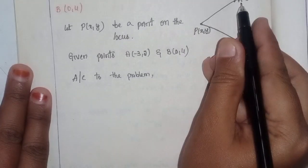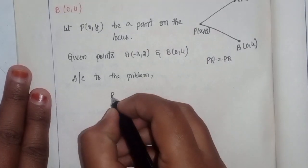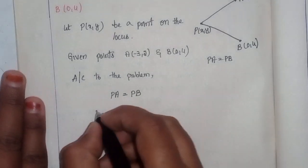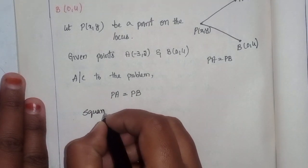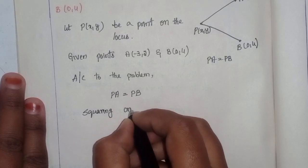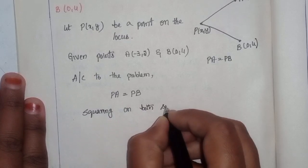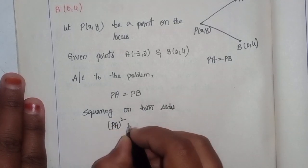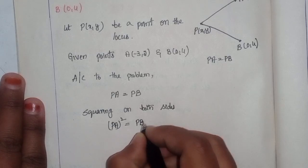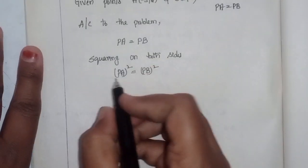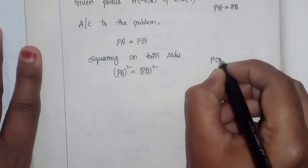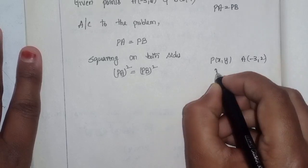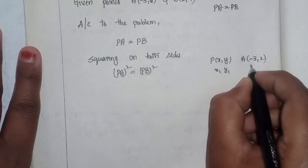According to the problem, PA is equal to PB. Squaring on both sides, we get PA² is equal to PB². Here, point P is (x, y) and point A is (-3, 2), so this is (x₁, y₁) and (x₂, y₂).